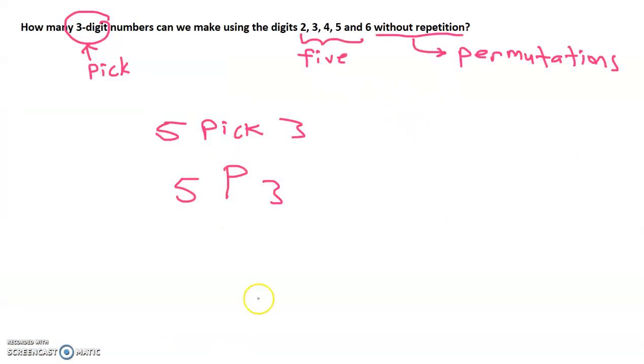So that means that there are 60 three-digit numbers that we can make using these five numbers. So that's how you would do it with a calculator.